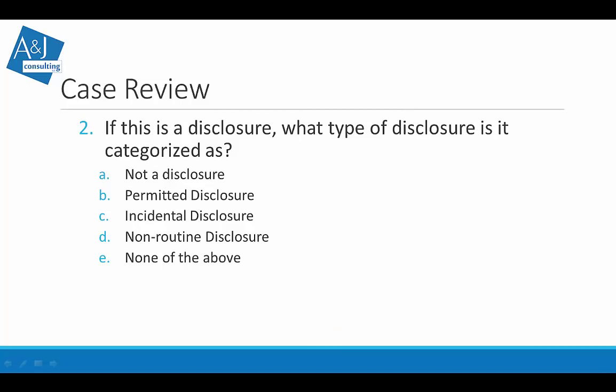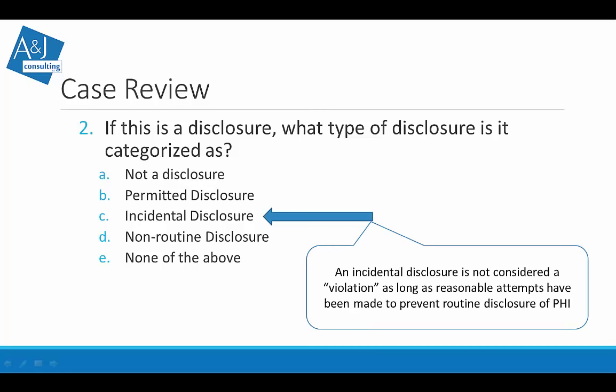Since this is a disclosure, which type is it? The correct answer is C — incidental disclosure. It is not necessarily considered a violation as long as there have been reasonable attempts to prevent routine disclosure of PHI. If a pharmacist counsels a patient and another patient overhears in the waiting room, it could result in a complaint and potentially a violation, but it is not automatically a violation if deemed an incidental disclosure.